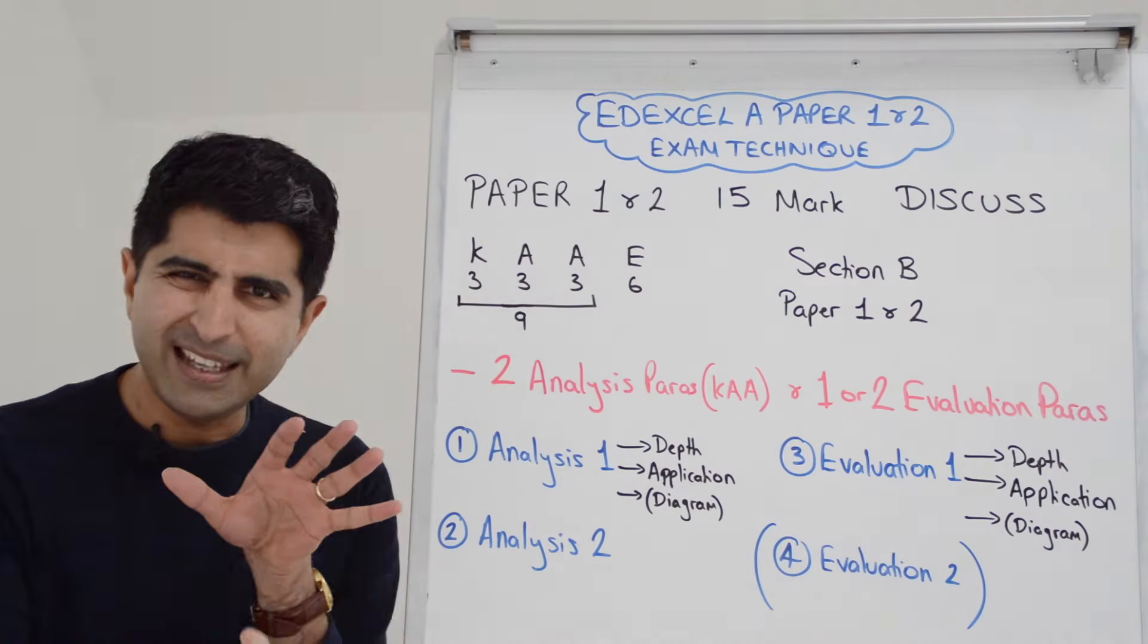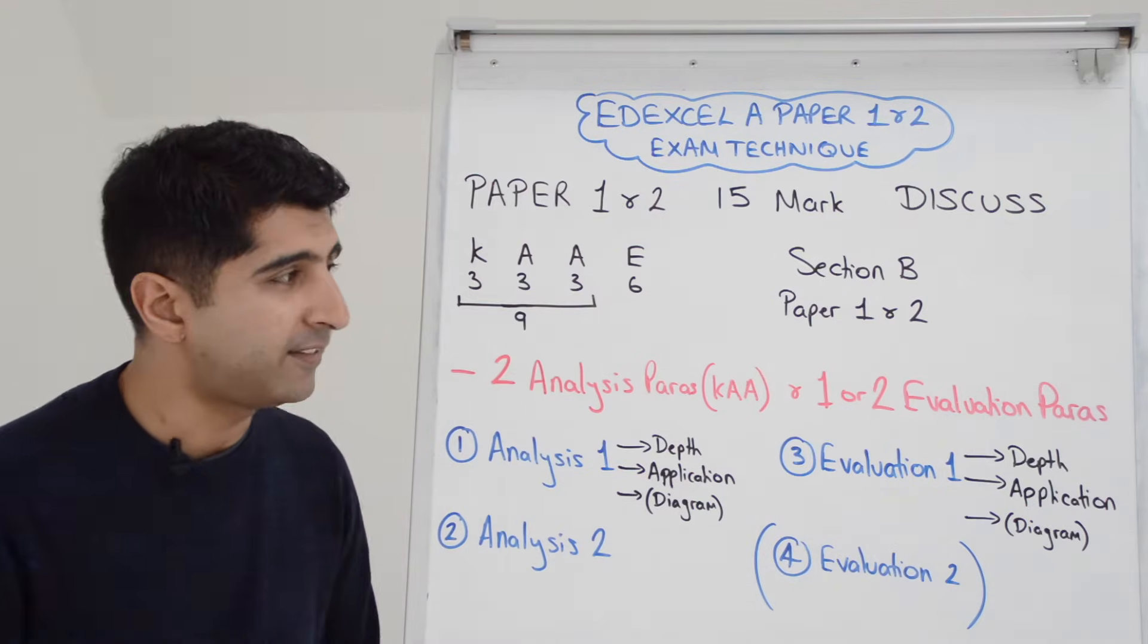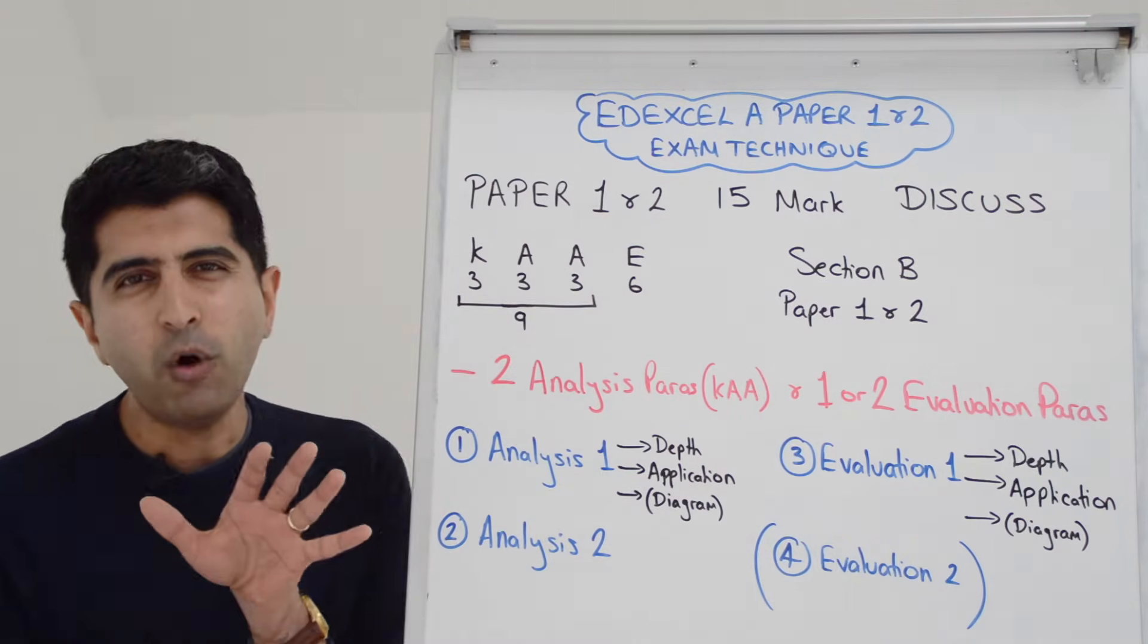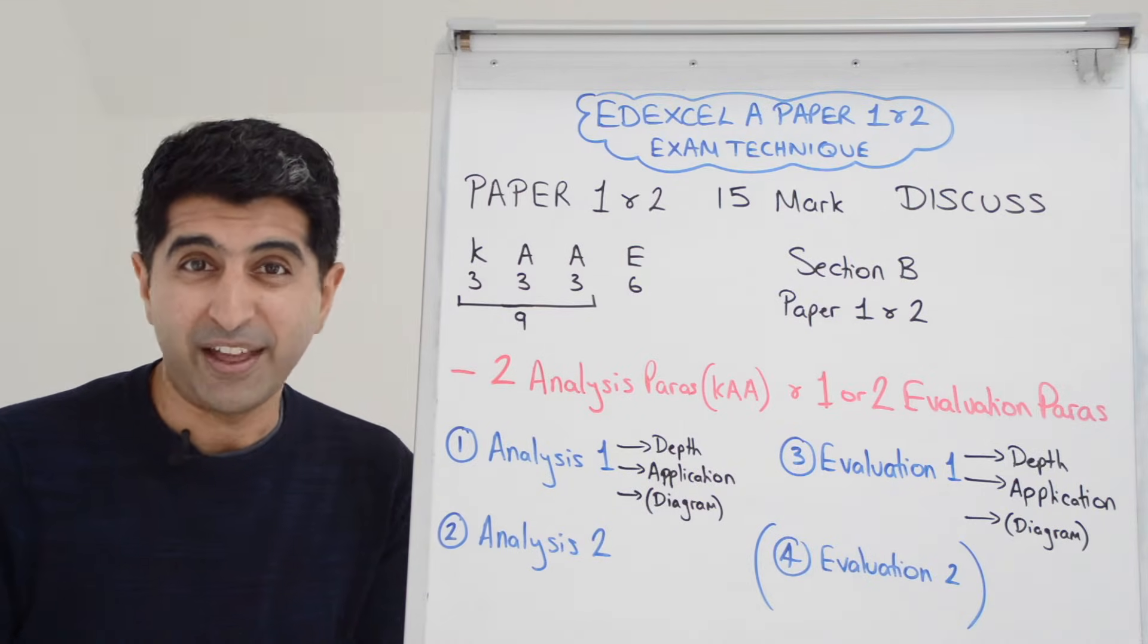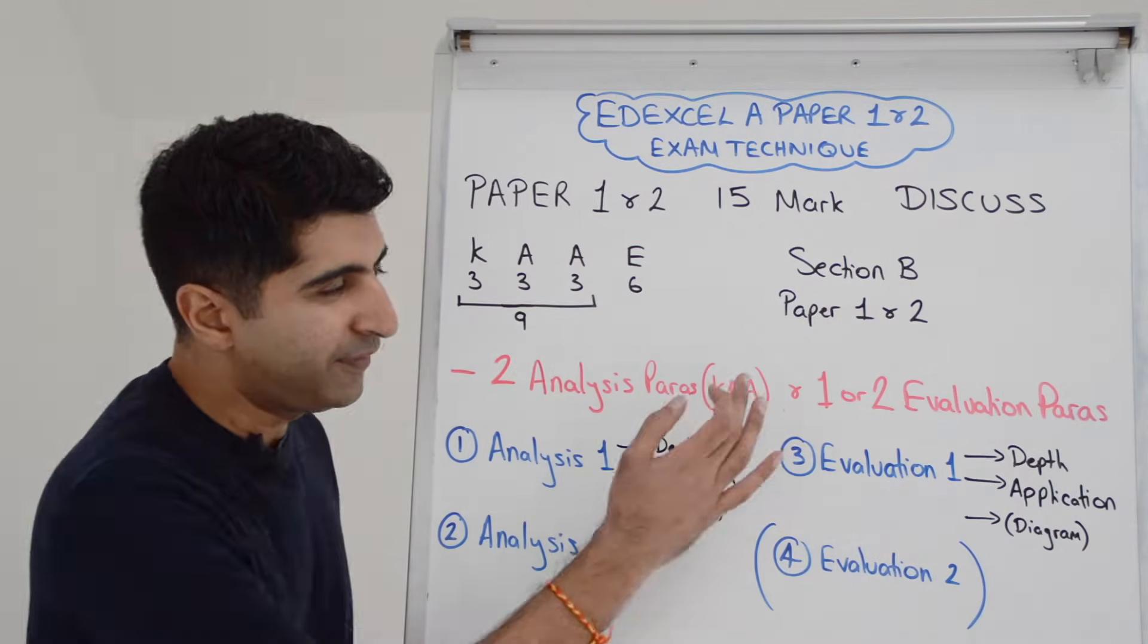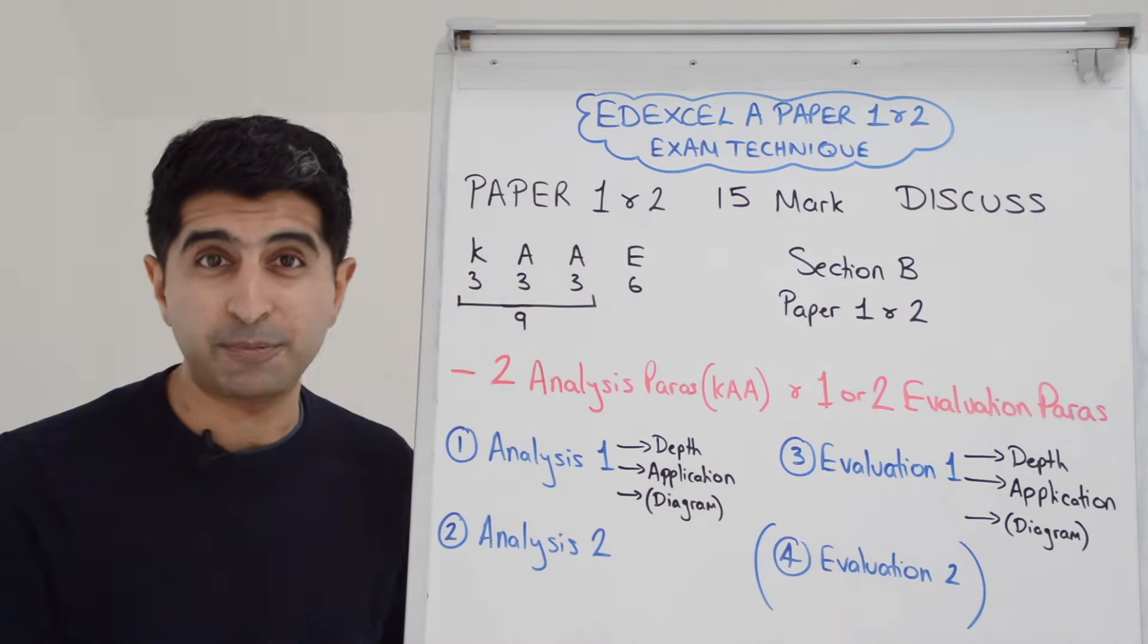You write your first one, see the detail that you're writing, and you have to decide, shall I write a second or not? If you've written one in maximum detail, loads of detail, you've probably used up your time already. That's just what good detail will do. Whereas if you've written it quite short, you probably will have spare time for a second.